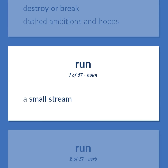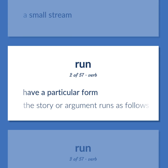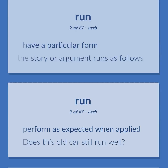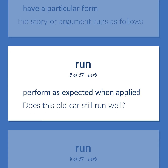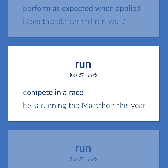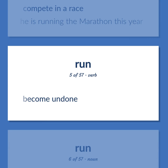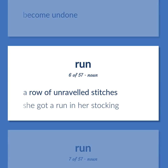Run. A small stream. Have a particular form — the story or argument runs as follows. Perform as expected when applied — does this old car still run well? Compete in a race — he is running the marathon this year. Become undone. A row of unraveled stitches. She got a run in her stocking.